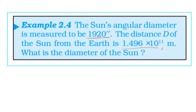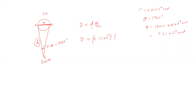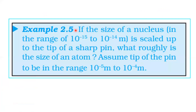The distance of the Sun from the Earth is 1.496×10¹¹ meters, so the diameter of the Sun equals the distance multiplied by theta, equal to 10⁻⁶ radian times the distance.